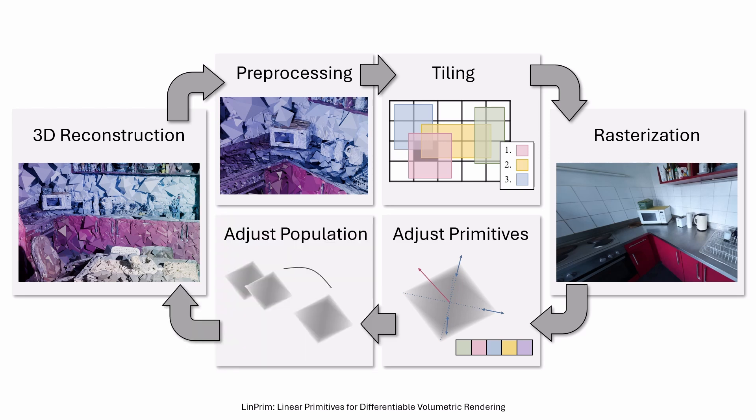To adjust the primitive population, additional primitives are added when position gradients are large, while undesired transparent and large primitives are removed.